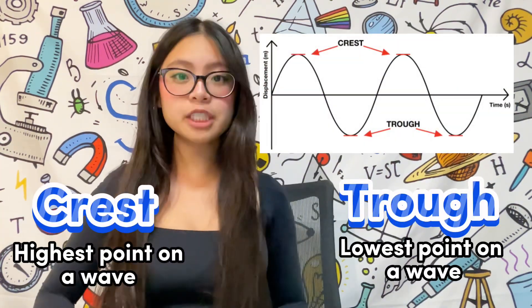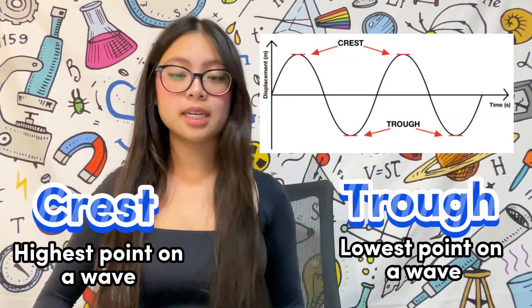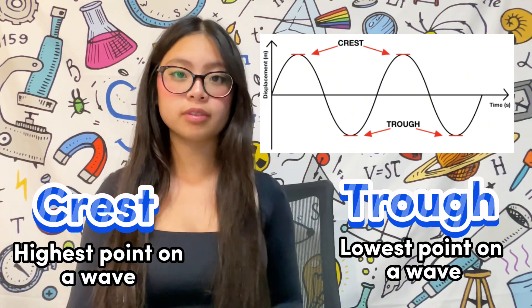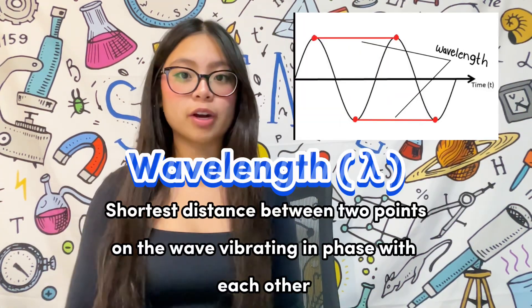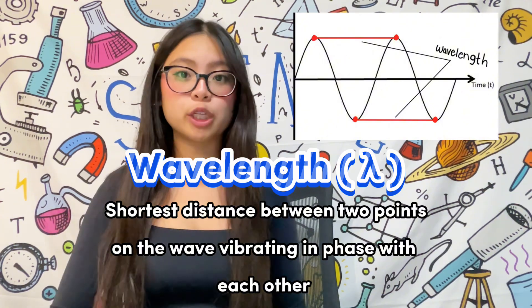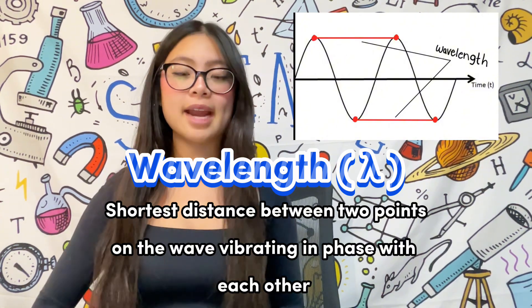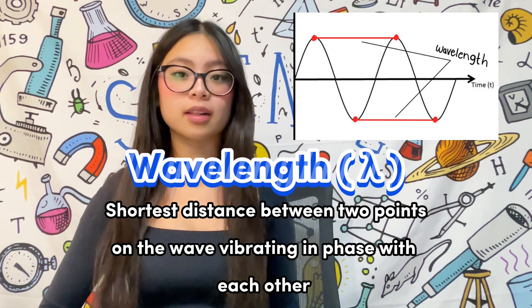The highest point on a wave is known as the crest. Similarly, the lowest point on a wave is known as a trough. Wavelength refers to the shortest distance between two points on the wave that are vibrating in phase with each other and is represented by the Greek letter lambda.